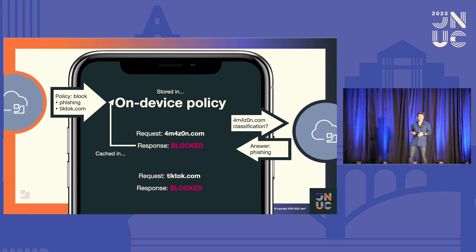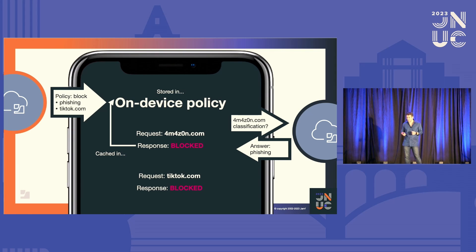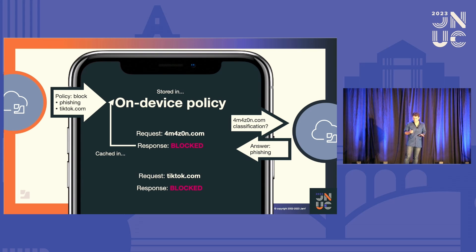We could say this is the security equivalent of declarative device management. What's more, you can have tens of thousands of rules in the cache stored without any perceivable change in latency. And as a bonus, if you have users who use personal VPNs, these rules cannot be bypassed with a personal VPN, as opposed to cloud-based vectoring. So you can do more, and you can also do it better with the on-device content filter.